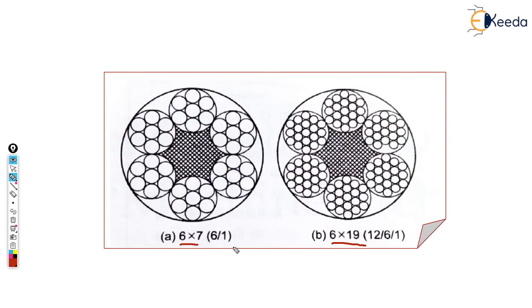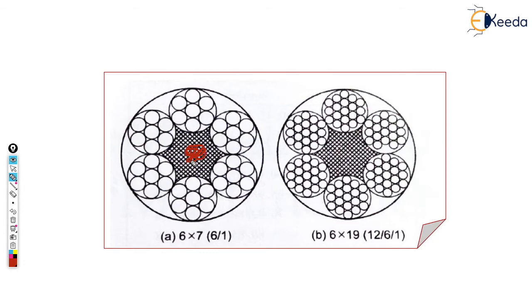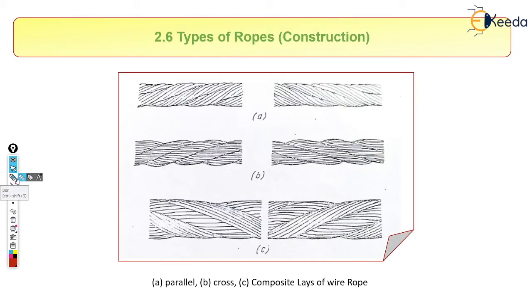Comparing all three ropes, 6×37 is used most commonly. Looking at the cross-sections: for the 6×7 rope, we can count six strands, and in each strand there are seven wires, with the core region visible in the center. Similarly, for the 6×19 rope, there are six strands and nineteen wires in each strand. This is the method of representing any rope.